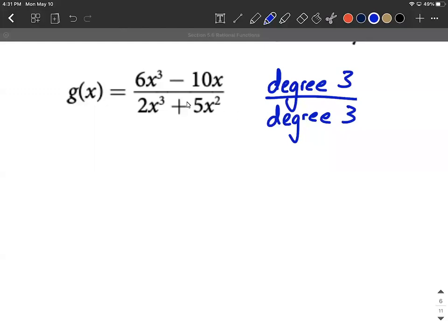Whenever we have the exact same degree between numerator and denominator, this is going to have a horizontal asymptote at y equals the ratio of leading coefficients. So that ratio of leading coefficients is the coefficients out in front of the highest power of x for both the numerator and denominator.